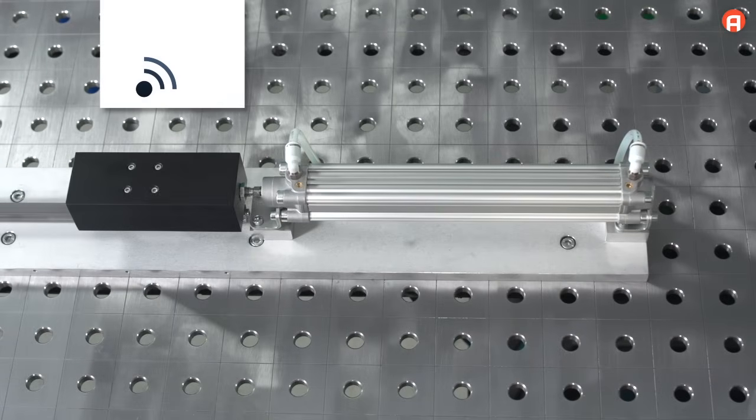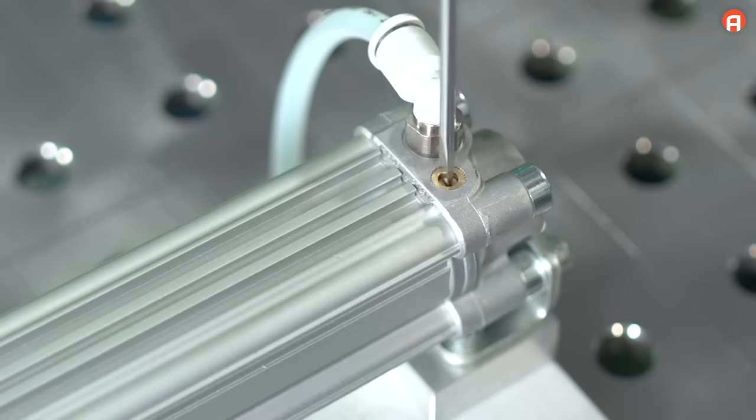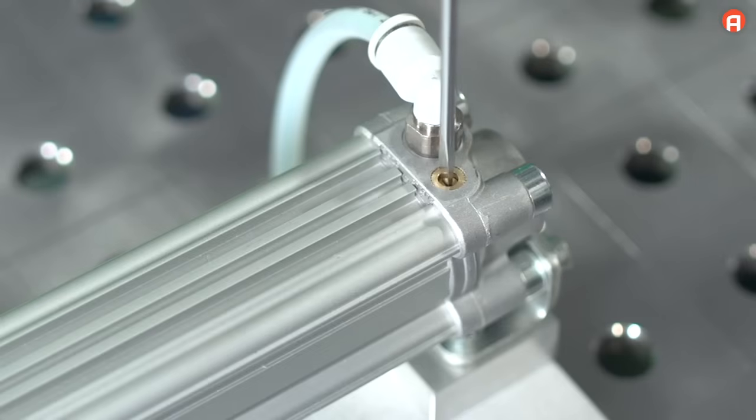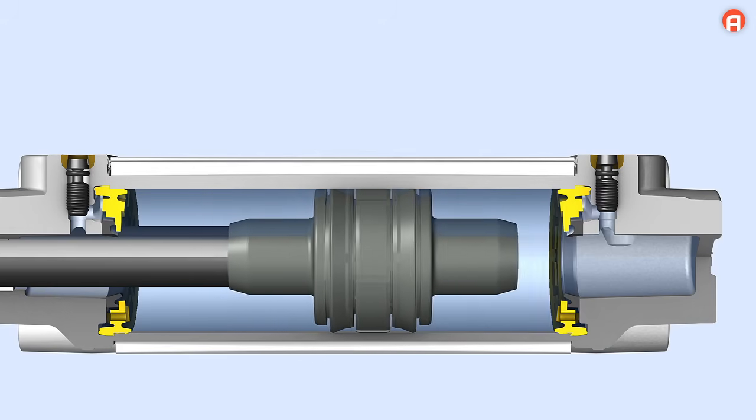To adjust the cushioning, slowly loosen the throttling screw. The cylinder noise will increase slightly, but the piston vibrations will already start to decrease. The vibrations will continue to decrease as you open the choke channel.